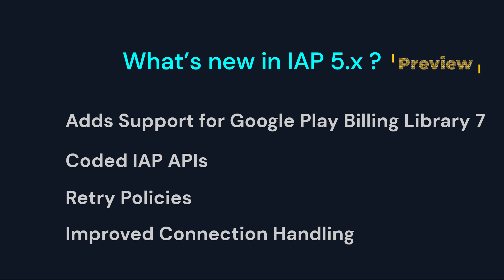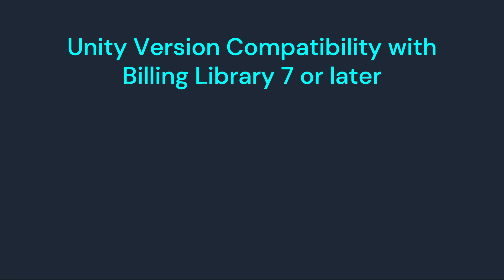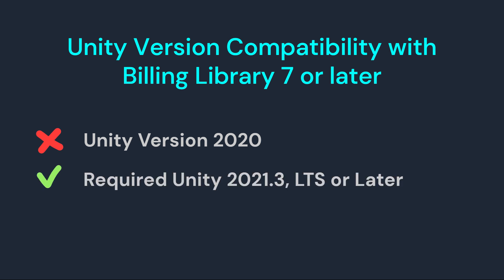But be aware: IAP 5.x is still in preview right now, meaning it's not the final stable version yet. Also important — Unity IAP 5.x does not support Unity 2020 anymore. To use IAP 5.x, you'll need to be on Unity 2021.3 LTS or newer.